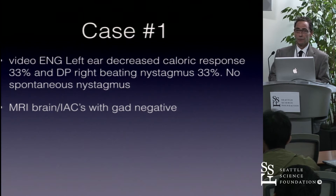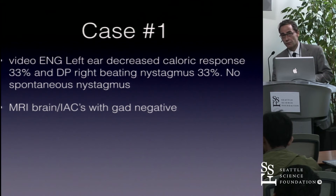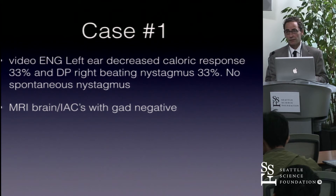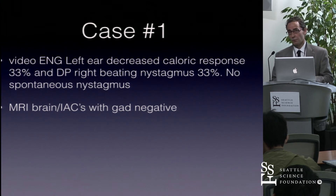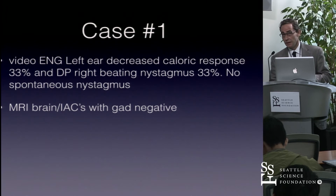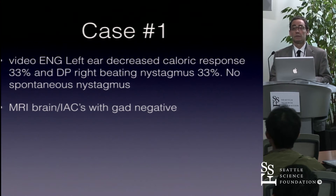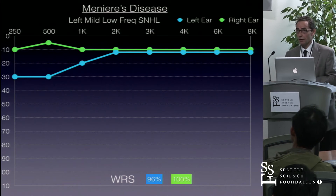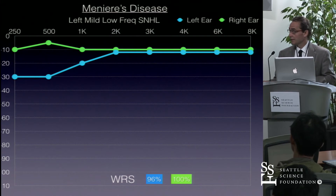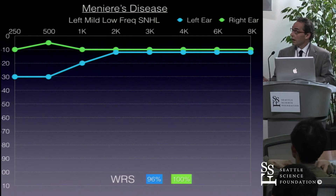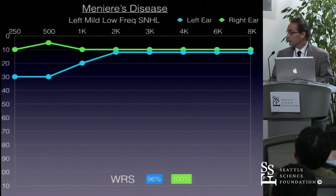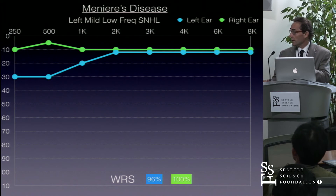Videonystagmography demonstrated a left-sided weakness of 33%, with direction-preponderant right-beating nystagmus at 33% and no spontaneous nystagmus. Neuroimaging was negative. His audiogram showed a left-sided low-frequency sensorineural hearing loss with good word recognition score.